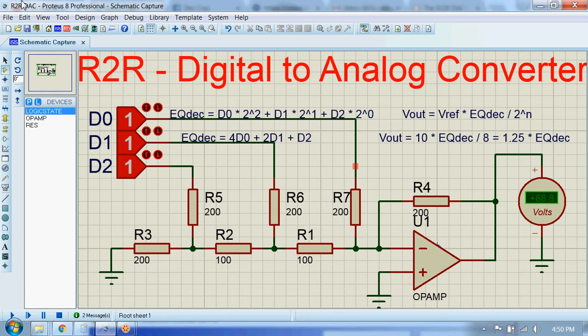We will supply a 3-bit input and the corresponding analog output will be displayed on this voltmeter. Here EQ DEC is equivalent decimal of this input and it's given by 4*D0 + 2*D1 + D2.